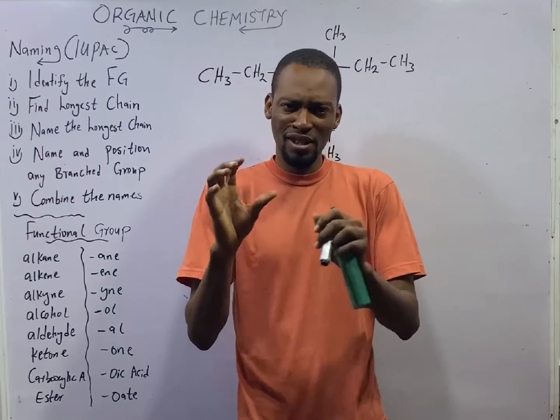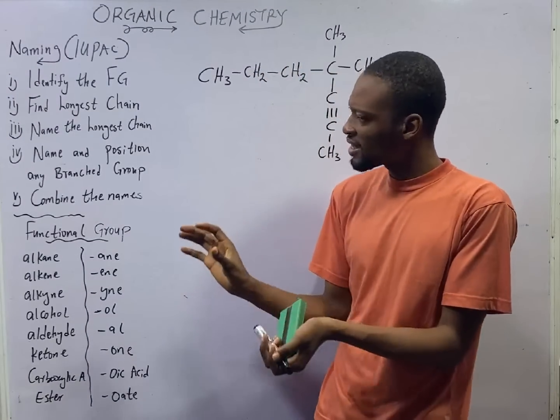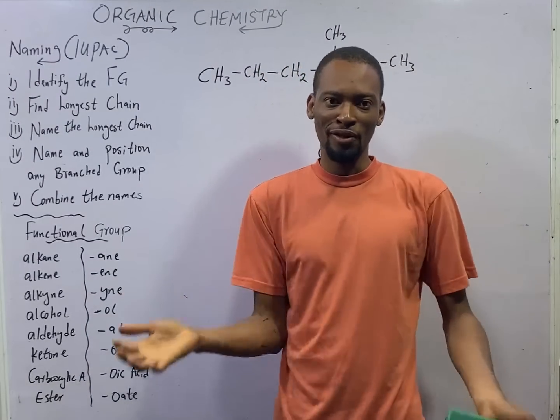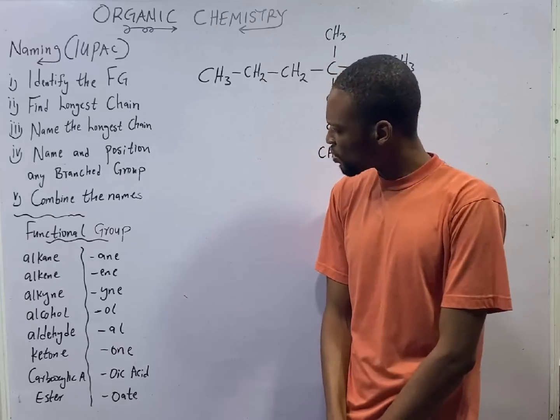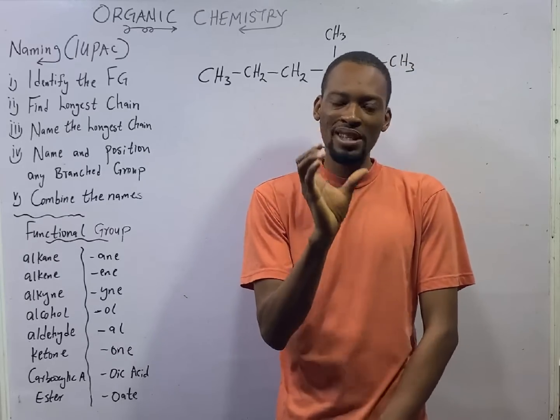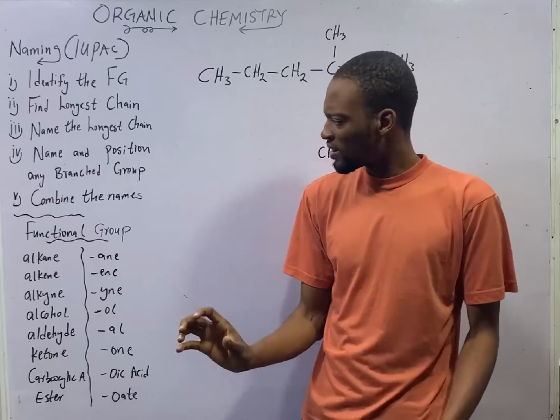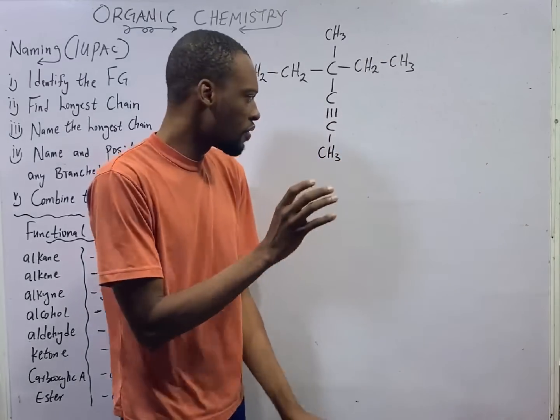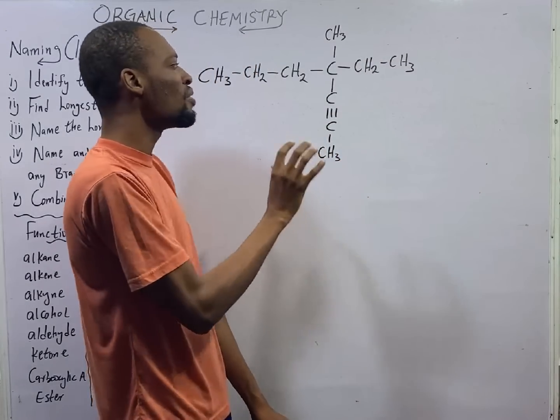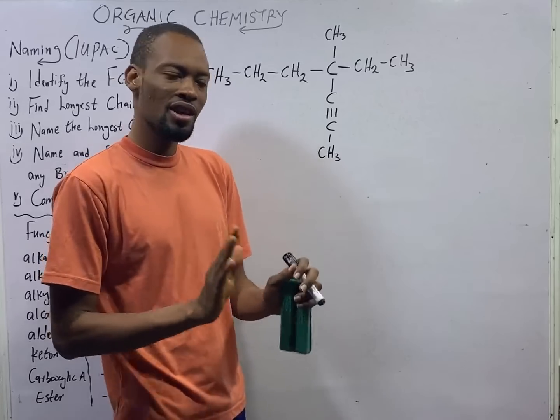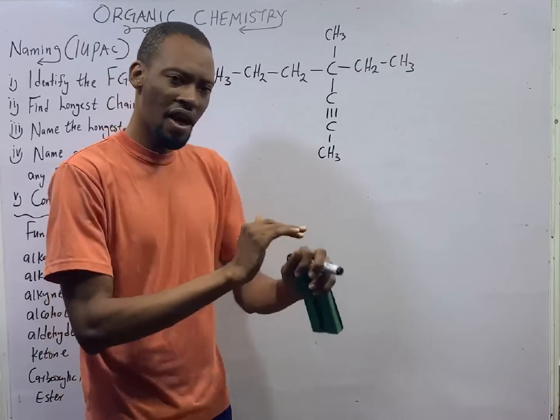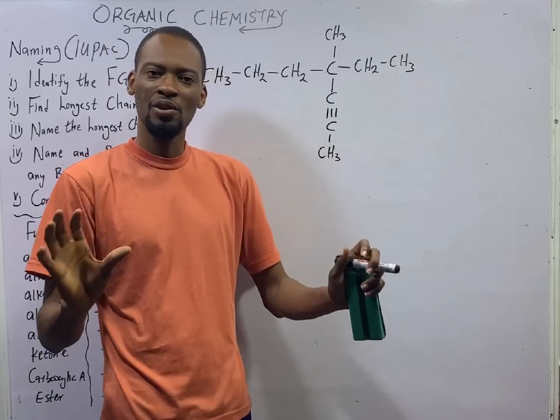This is episode number 79 of the 120 Days to Jamb Chemistry with Flash Isaac. In this episode, I have just one business with you. What is the business? To name this compound. This is the only business I have with you in this episode. Other businesses are secondary.